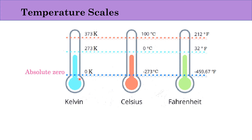0 Kelvin, or absolute zero, corresponds to approximately minus 273 degree Celsius. At this point it is absolute zero temperature, and in degree Fahrenheit it is about minus 459.67 degree Fahrenheit.